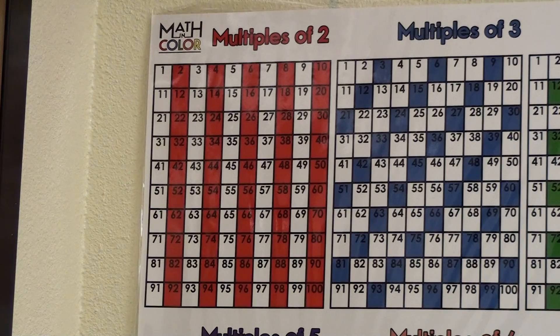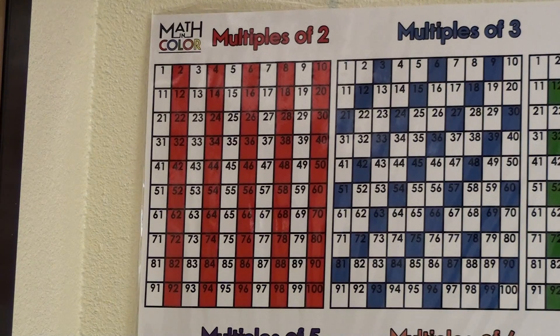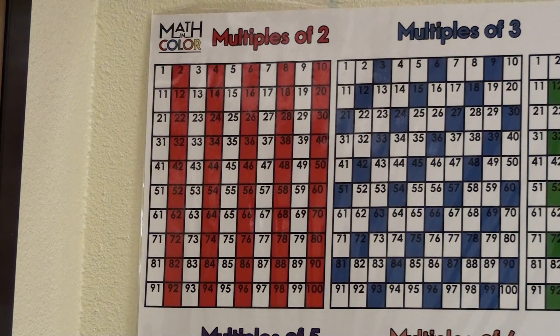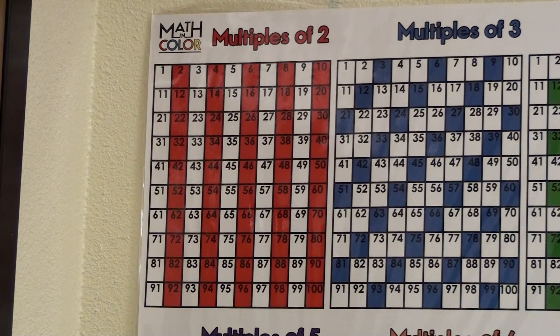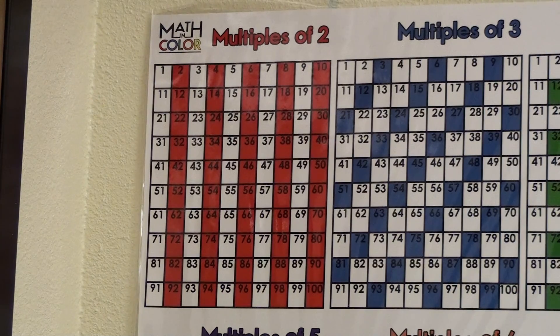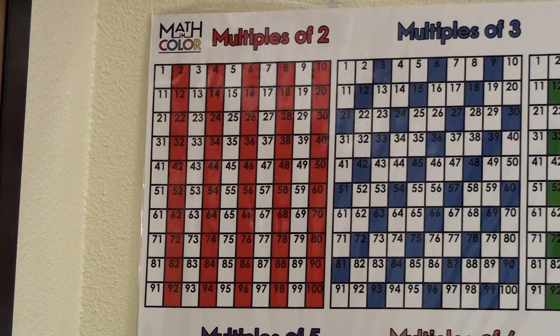By looking at the multiples of 2 chart on the Math and Color multiples chart, you can easily see all of the numbers highlighted in red are even.